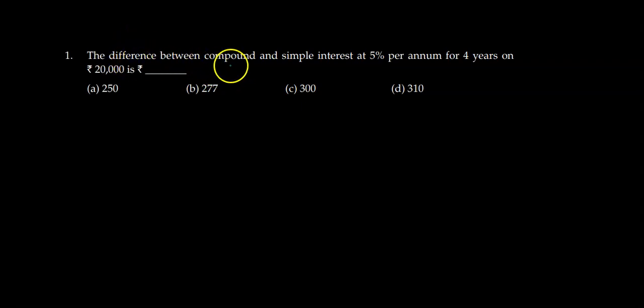The difference between compound and simple interest at 5% per annum for 4 years on Rs. 20,000 is - So here the principal given is 20,000, then time period is 4 years, and rate of interest is...